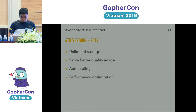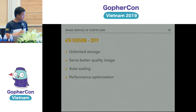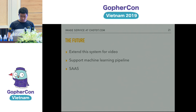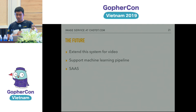This is what we have achieved so far: we no longer worry about storage, we can serve better quality images, and with Google Cloud Functions we have auto-scaling. Because we pre-resize all images, every time a user fetches an image it's really fast — no waiting for resize before returning to the client. For the future, we want to use this system for video, support machine learning, and because we have two websites in Malaysia and Myanmar, we want to use this system as a shared service across three countries.